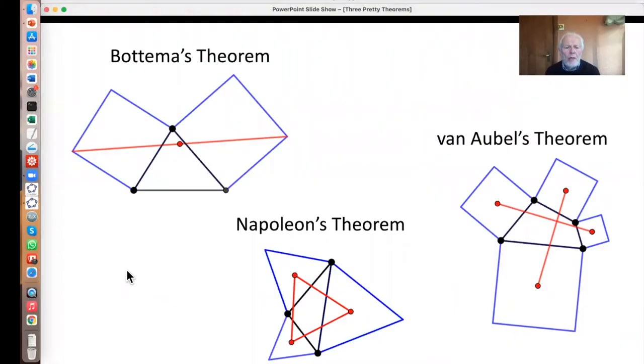So here are the pictures for them. They have a certain amount in common. They all start with a general figure, a triangle here, a quadrilateral here, and then we put some regular figures around the outside, which are squares here and here, and equilateral triangles here, and then some magic happens, and the magic's different in each case.